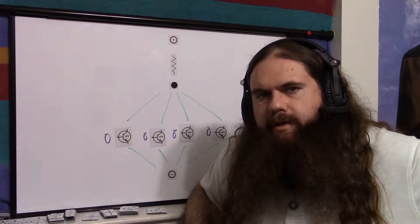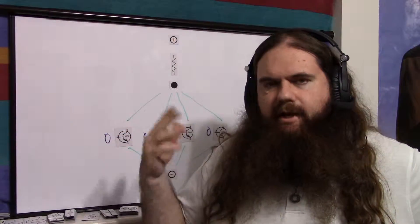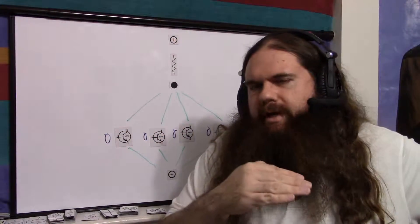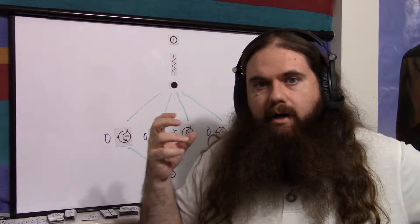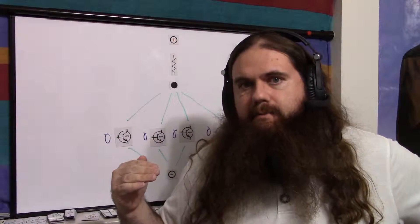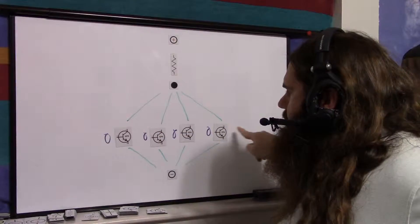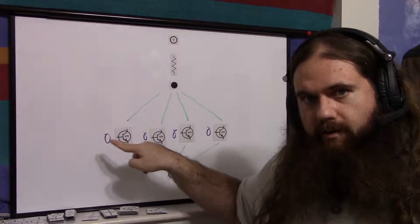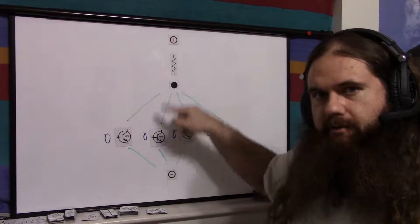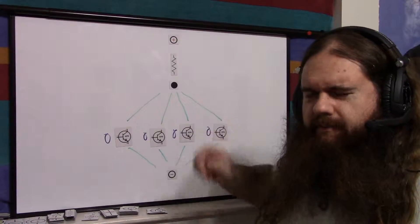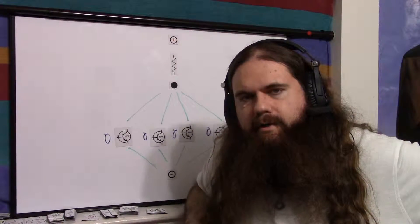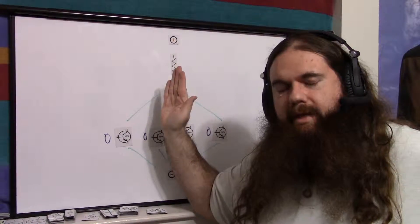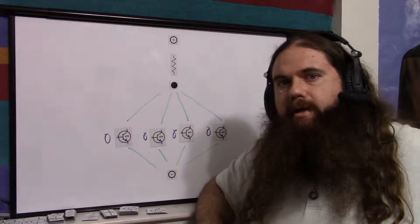The OR function says the output is high if any of the inputs are high — the only way to get a zero on OR is to have all zeros as input. In this case, all zeros on input equals one (high output). If any of these are one, it shorts down to zero and you get zero out. That's the opposite of the OR function, which means it's a NOR gate. So in serial, NPNs make a NAND gate. In parallel, they make a NOR.